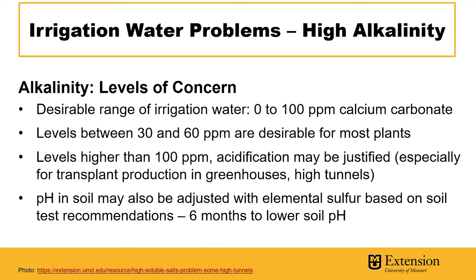In terms of the levels of concern with alkalinity in irrigation water, the desirable range is between 0 to 100 ppm of calcium carbonate, and levels between 30 and 60 are desirable for most plants. With levels higher than 100 ppm, acidification of irrigation water may be justified to reduce alkalinity.